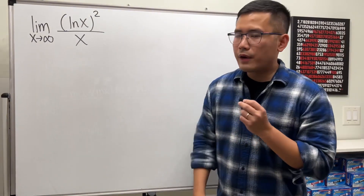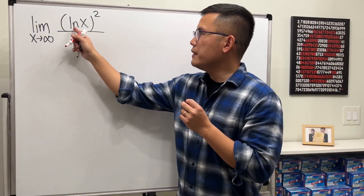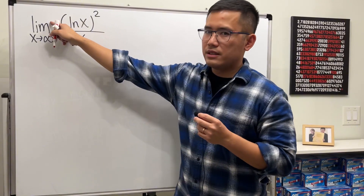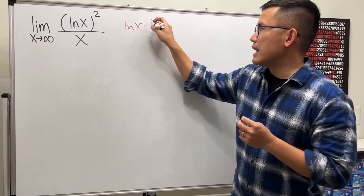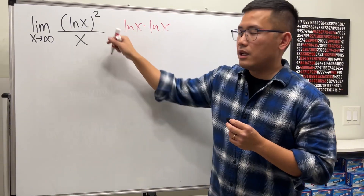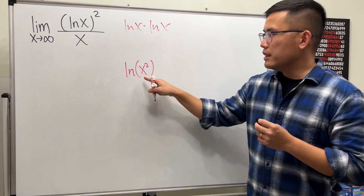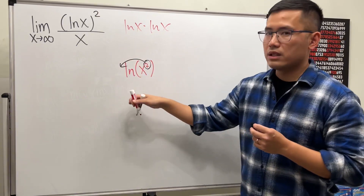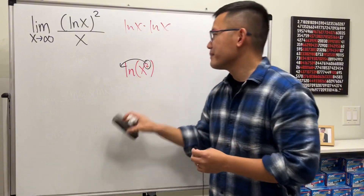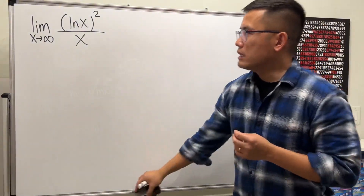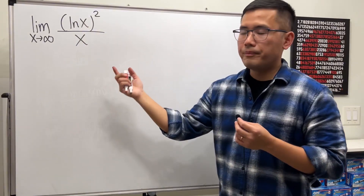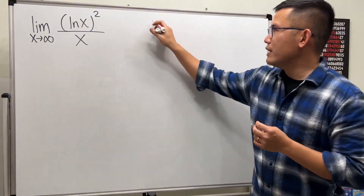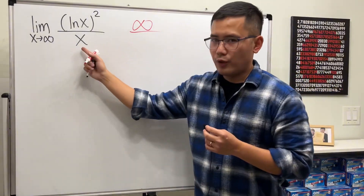Here we have the limit as x approaches infinity of (ln x)² over x. Note that the exponent 2 cannot be brought to the front here, because this means ln x times ln x. Only when you have ln(x²) can you bring the 2 to the front. Plugging in infinity: ln(∞) is infinity, squared is still infinity on top, and infinity on the bottom — so we have infinity over infinity. L'Hôpital's Rule applies.